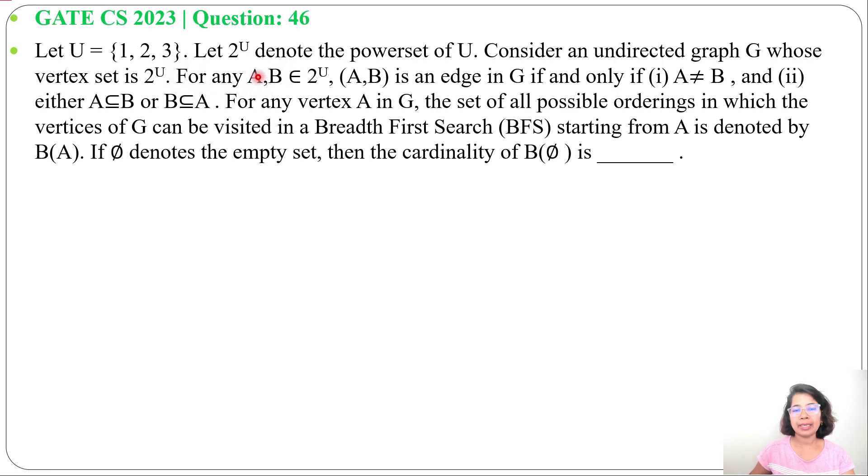For any A, B ∈ 2^U, (A,B) is an edge in graph G if and only if A ≠ B and A ⊂ B or B ⊂ A.